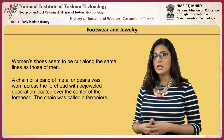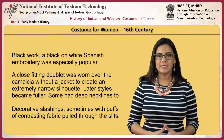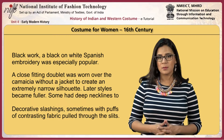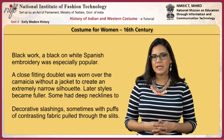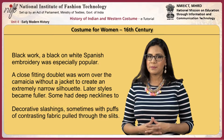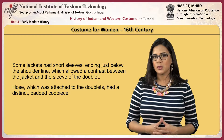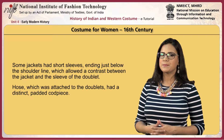The main costumes for men in the 16th century were: blackwork, a black on white Spanish embroidery, was especially popular. A close fitting doublet was worn over the camicia without a jacket to create an extremely narrow silhouette. Later styles became fuller. Some had deep necklines to show off embroidered camicie. Decorative slashings sometimes had puffs of contrasting fabric pulled through the slits. Some jackets had short sleeves ending just below the shoulder line, which allowed a contrast between the jacket and the sleeve of the doublet. Hose, which was attached to the doublets, had a distinct padded codpiece.